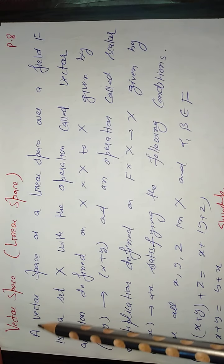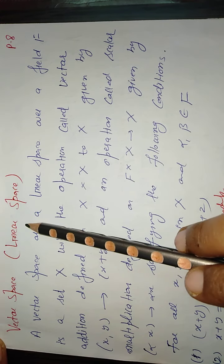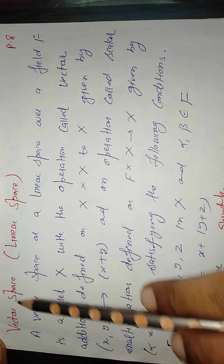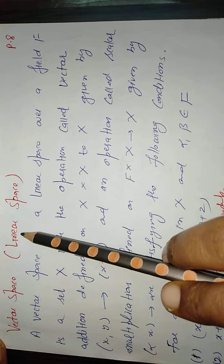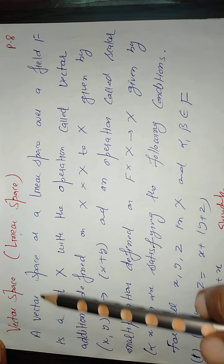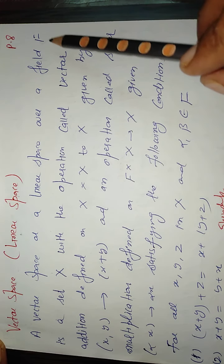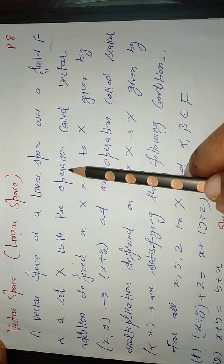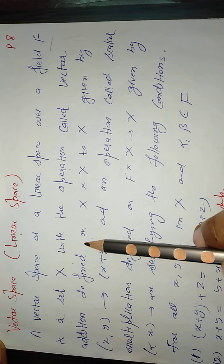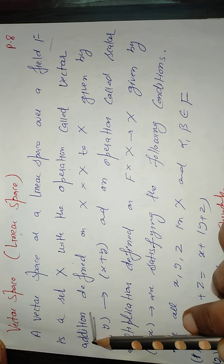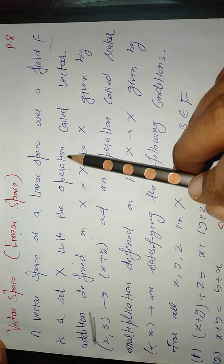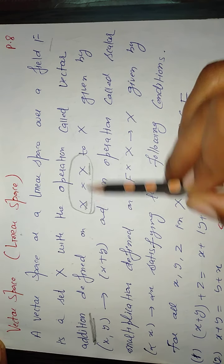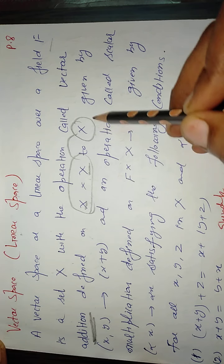For defining normed linear spaces, we will use a vector space or a linear space. What is a vector space or a linear space? These are synonymous with each other — vector space is the same as a linear space. A vector space or a linear space over a field, which is either the real numbers or complex numbers, is a set x with an operation called vector addition.